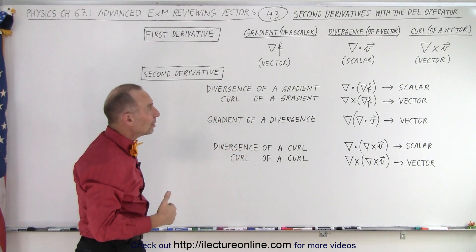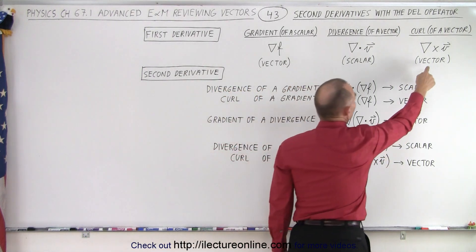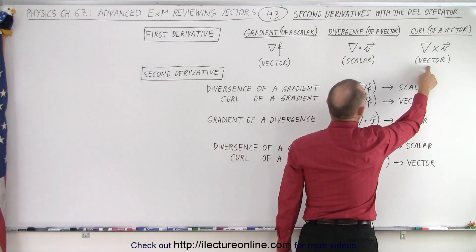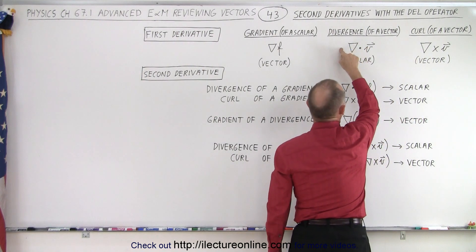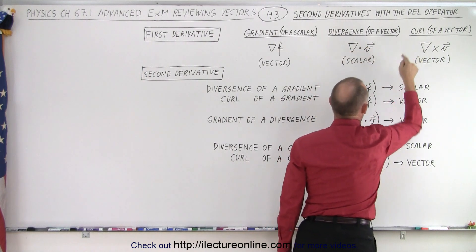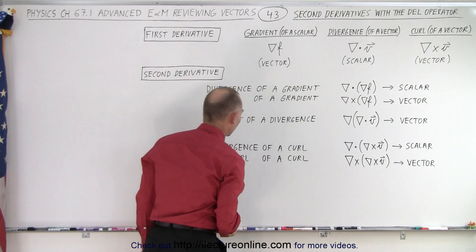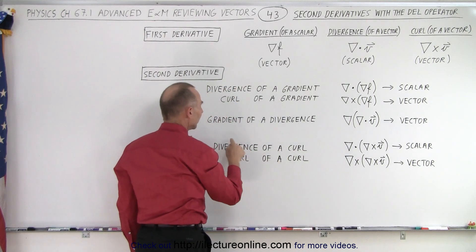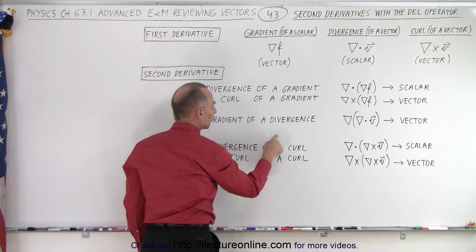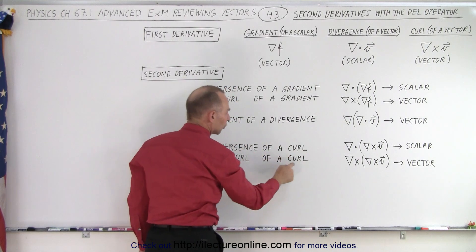And when you do a curl, you end up with a vector, and there are only two things you can do with a vector. You can take the divergence or you can take the curl of a vector, but you can't take the gradient of a vector. So if you did a curl, you can take the divergence of a curl, or you can take the curl of a curl.